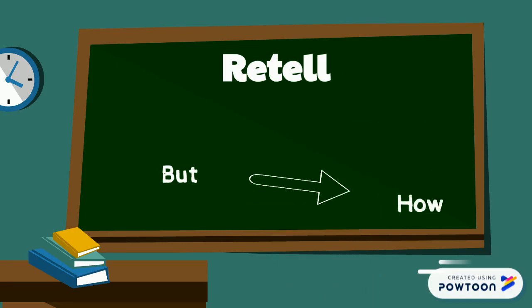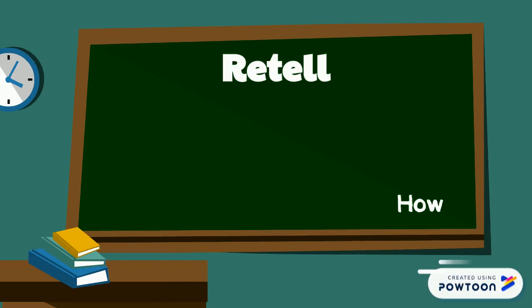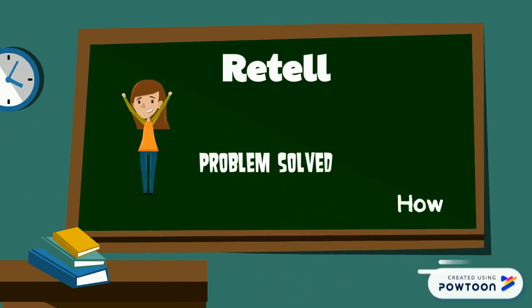The last part of retelling is the how. How is the problem resolved at the end? How does the character overcome their challenges or problems and solve it?